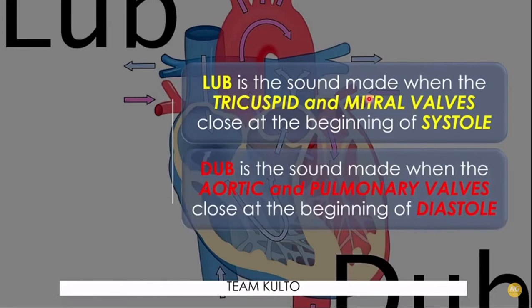Lub is the sound when the tricuspid and the mitral valve close at the beginning of the systole. Dub is the sound when the aortic and pulmonary valves close at the beginning of the diastole. The valves involved are the aortic and pulmonary valves, and they produce the dub sound. Hence, the lub-dub, lub-dub heart valves.